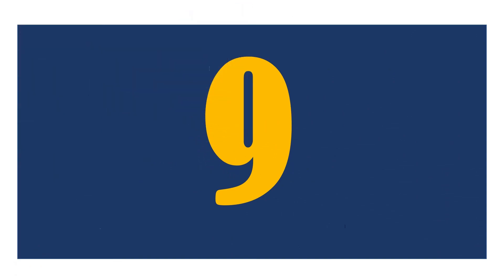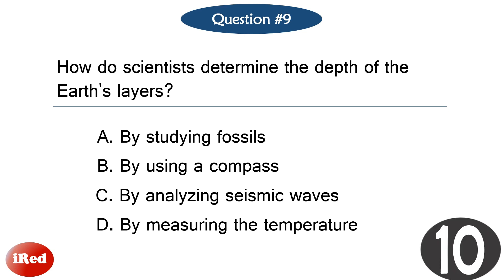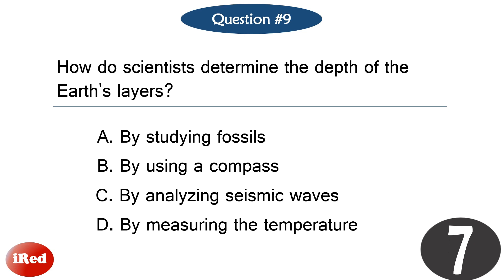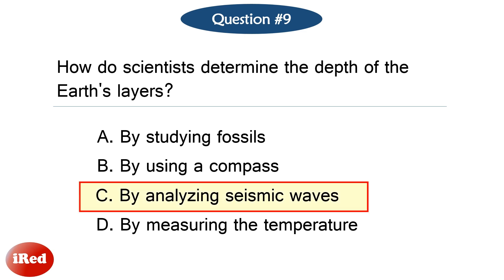Question number nine. How do scientists determine the depth of the earth's layers? The correct answer is letter C, by analyzing seismic waves.